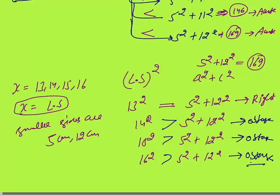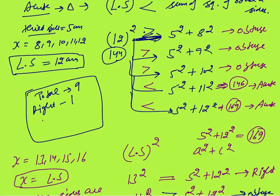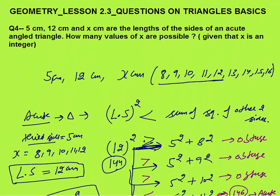So in total there were 9 triangles: 1 right angle triangle, 2 acute angle triangles, and 6 obtuse angle triangles. The answer for the number of acute angle triangles is 2. That's how you can solve this kind of question — the examiner may ask for obtuse, acute, or any triangle. First calculate all possible values of the third side, then compare the largest side squared with the sum of squares of the other two sides. That was all about lesson 2.3 questions on triangle basics. Thank you.